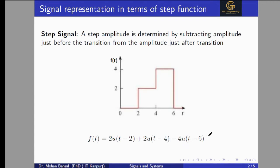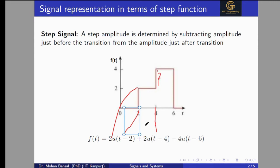We can also solve this in a different way. Starting amplitude is 0 and it changes at t=2, so we write 2·u(t−2) since the step is taken by 2 in the positive direction. At t=4, the amplitude goes from 2 to 4, so step is again taken by 2, giving plus 2·u(t−4). At t=6, the amplitude decreases by 4, so we write minus 4·u(t−6). Both methods give the same result.